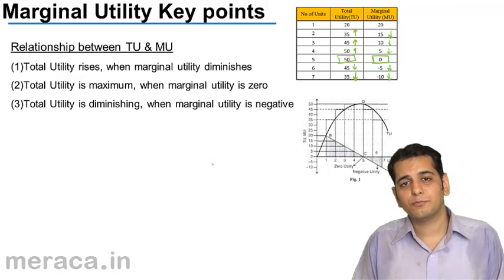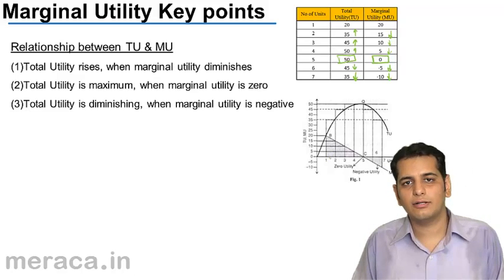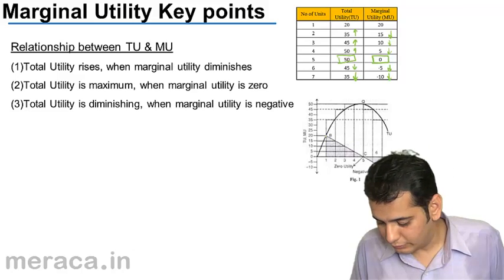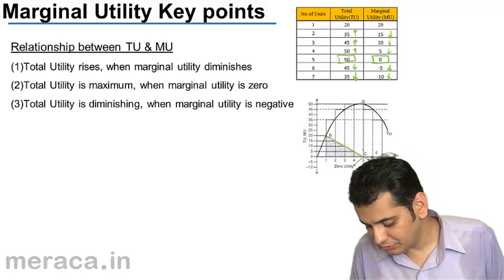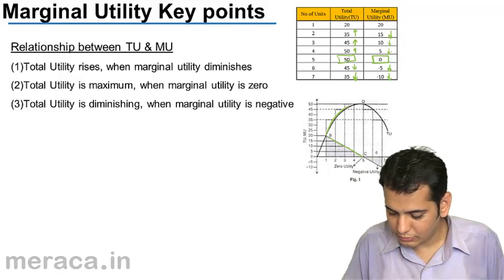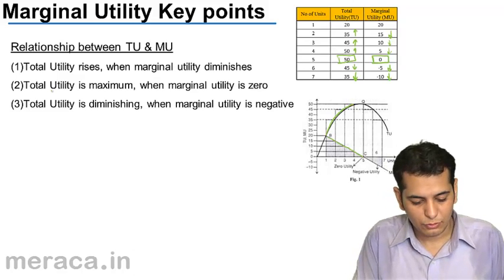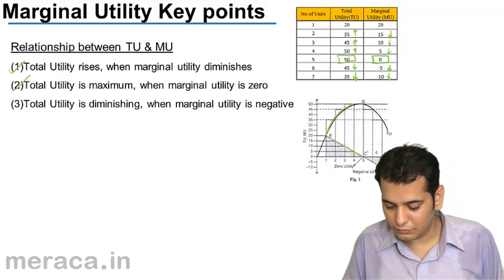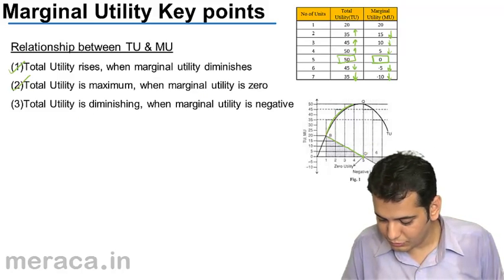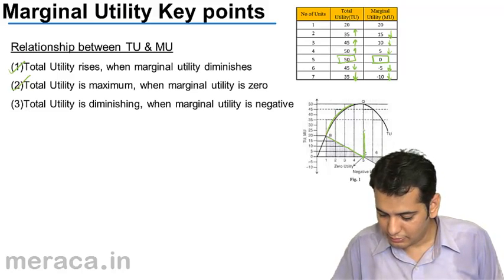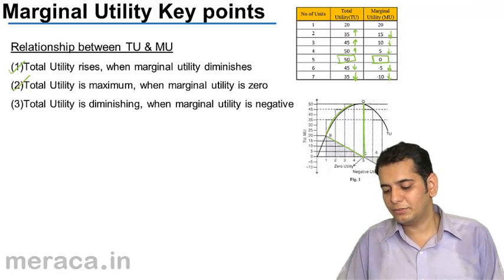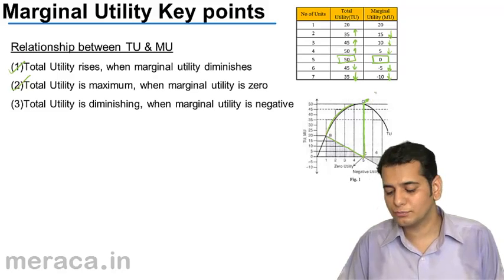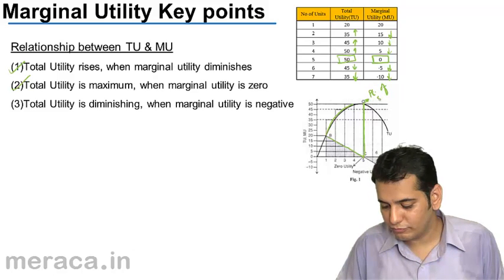This relation can also be explained with the help of a graph. On the graph, the marginal utility is diminishing but the total utility is rising. Total utility is maximum when the marginal utility is 0. At this point, we can see that the total utility is maximum — this point is known as the point of satiety.